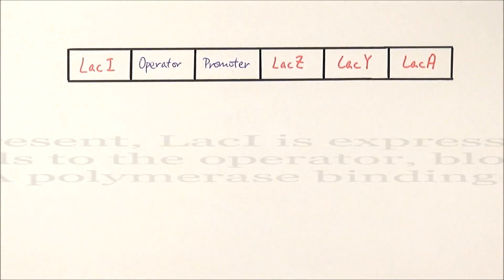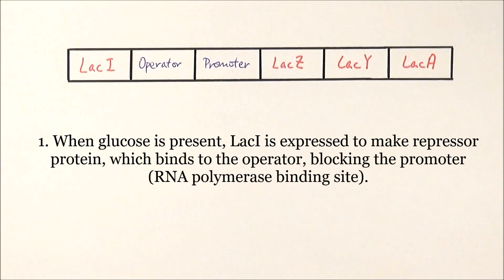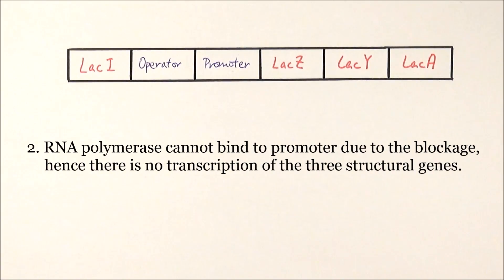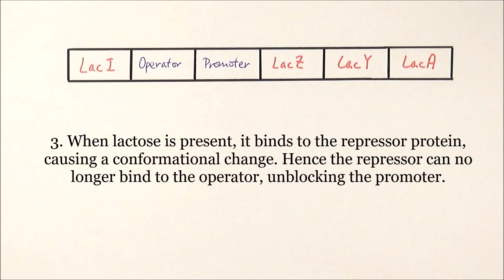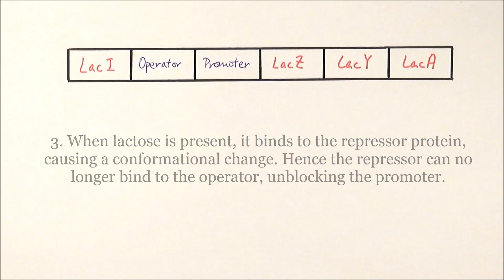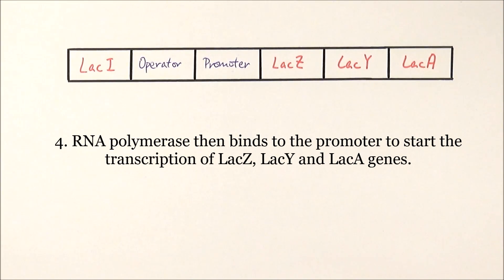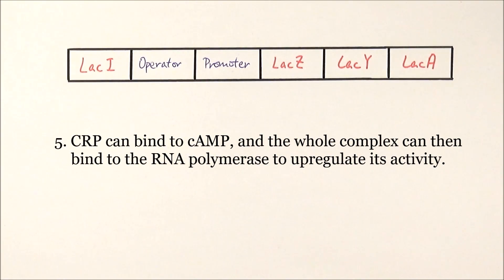In summary: normally when there is glucose, LAC-I is expressed to make the repressor protein, which binds to the operator and blocks the promoter, preventing RNA polymerase from binding and stopping transcription of the structural genes. If glucose is absent but lactose is present, lactose binds to the repressor protein causing a conformational change, so the repressor can no longer bind to the operator. It is released, revealing the promoter, and RNA polymerase binds to start transcription of LAC-Z, LAC-Y, and LAC-A genes. Additionally, the CAMP receptor protein CRP forms a complex with cAMP, which upregulates RNA polymerase action, making transcription of the structural genes much quicker and more efficient.